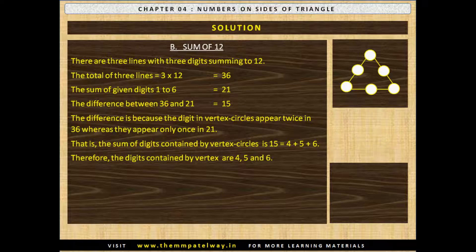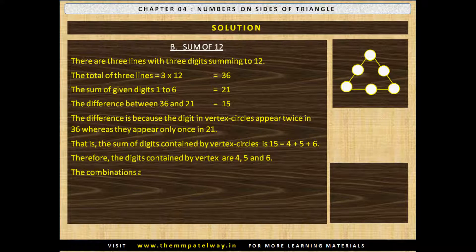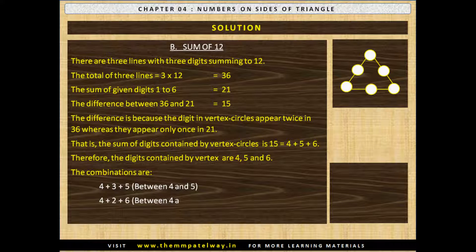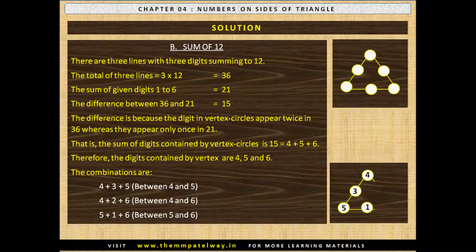This is the only possibility of getting a sum of 15. Therefore, the digits contained by vertex circles are 4, 5 and 6. The combinations are: 4+3+5 between 4 and 5, 4+2+6 between 4 and 6, and 5+1+6 between 5 and 6. The digits placed in the circles are shown.